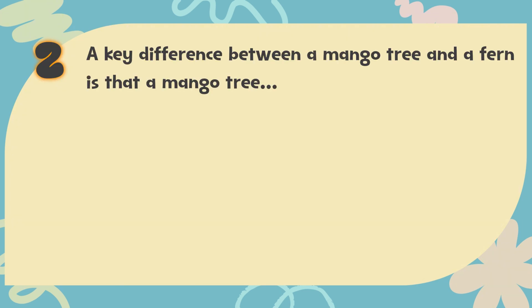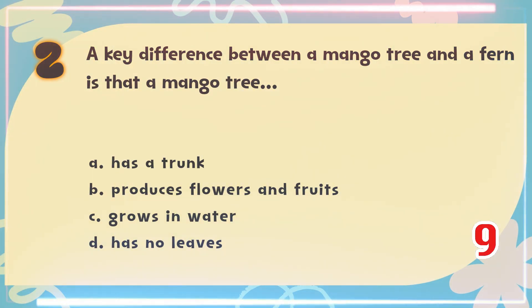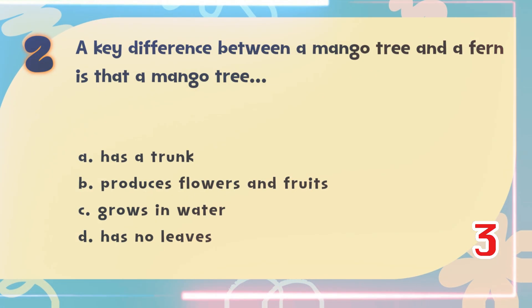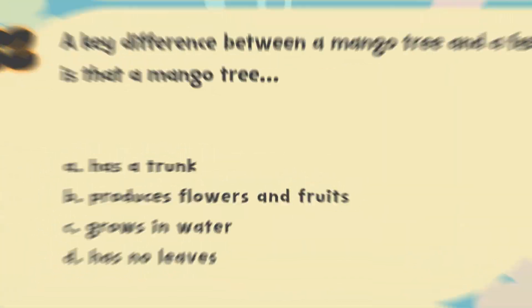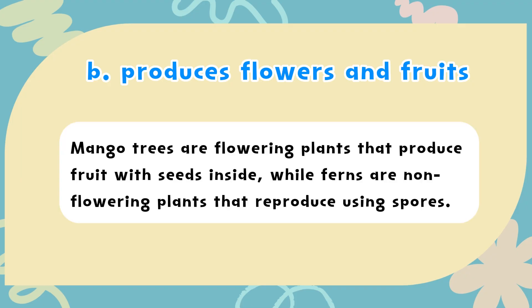Number 2: A key difference between a mango tree and a fern is that a mango tree — A. Has a trunk, B. Produces flowers and fruits, C. Grows in water, D. Has no leaves. The correct answer is B. Produces flowers and fruits. Mango trees are flowering plants that produce fruit with seeds inside, while ferns are non-flowering plants that reproduce using spores.